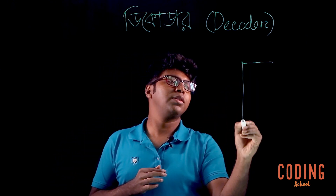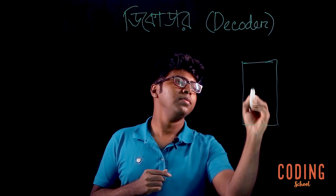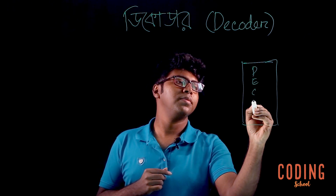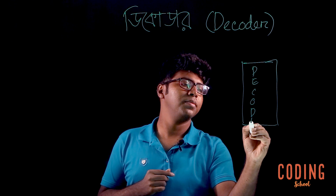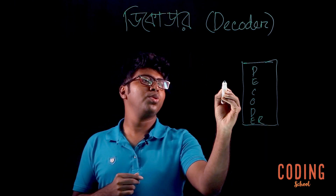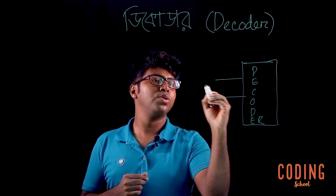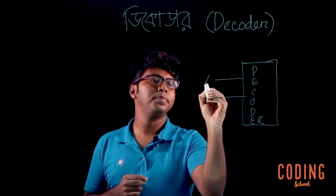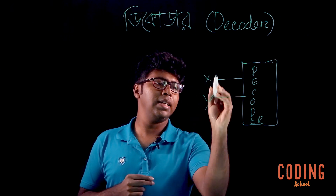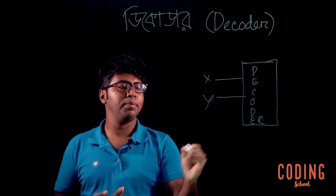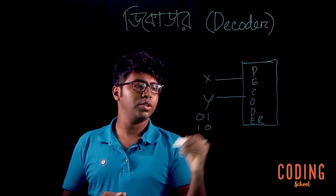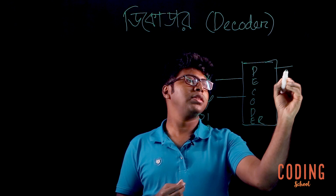So this is a decoder. Here we have a decoder, so we have two bits of input: x and y. We have a binary number — 0 and 1 — and the output is 4.